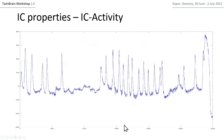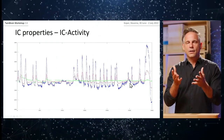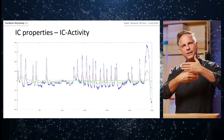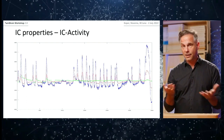Overlaying IC4, the horizontal eye movement IC, whenever there's strong lateral eye movement, that activity is well explained by the green IC time course. This is what I mean when I say: use your IC activation time course to compare with your EEG sensor data. You'll see how much each IC contributes to your sensor data. For eye movement, this is quite obvious.